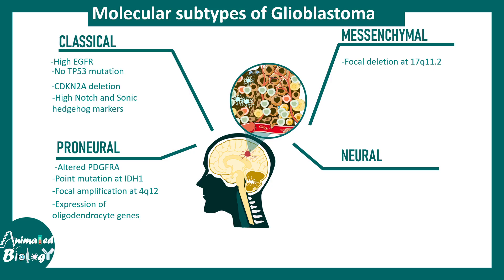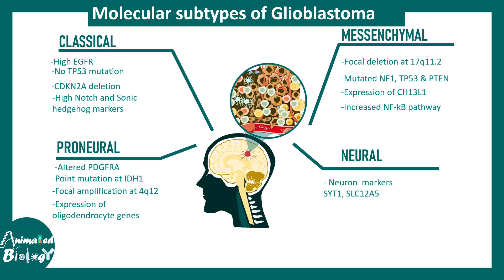Mesenchymal glioblastoma has focal deletions in chromosome 17q11.2 and mutations in NF1, TP53, and PTN. These specific molecular signatures differentiate it from other subtypes. Expression of CHI3L1 and increased NF-κB signaling output are also pretty common features of mesenchymal glioblastoma.